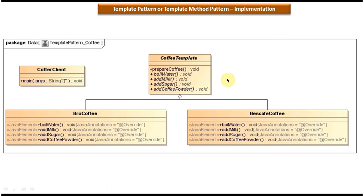This is the class diagram for the scenario we just discussed. At the top you can see a CoffeeTemplate abstract class which has abstract methods: boil water, add milk, add sugar, and add coffee powder. These abstract methods will be implemented by the subclasses. The CoffeeTemplate class also has a 'prepare coffee' method, which is the template method — it defines the procedure and sequence to prepare the coffee. This method is declared as final so that subclasses cannot override the procedure.